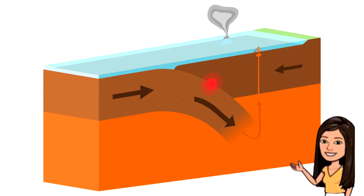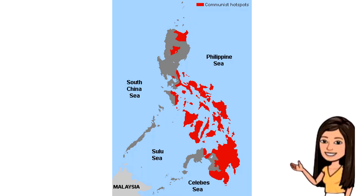In convergence of two oceanic plates, trench formation will occur. The trenches will become sources of earthquakes. Tsunami can be generated. Did you know that the Philippines originated from oceanic-oceanic convergence?